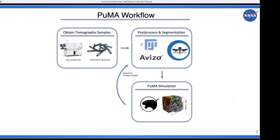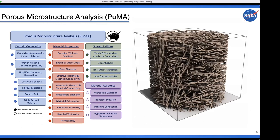What I'm going to be talking about assumes your material is already in a state that is either already segmented or can be easily thresholded, and properties will be run based on that. The properties I'll cover are: porosity and volume fractions, surface area, effective thermal and electrical conductivity, continuum tortuosity, and rarefied or non-continuum tortuosity.